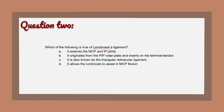Question 2: The correct answer is B — Landsmeer's ligament is also known as the ORL, or oblique retinocular ligament. Once you know that fact, you can eliminate C, the triangular retinocular ligament. Knowing the purpose of the ORL, we know it doesn't do extension of the MCP and IP joints or provide lumbrical assistance in MCP flexion, so B is correct.